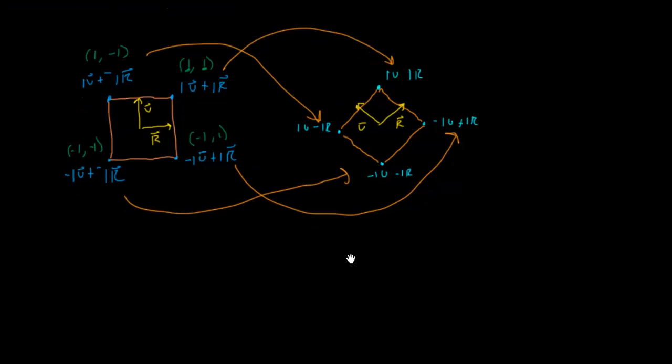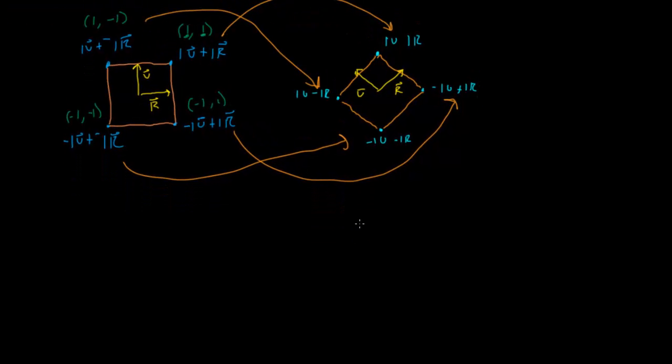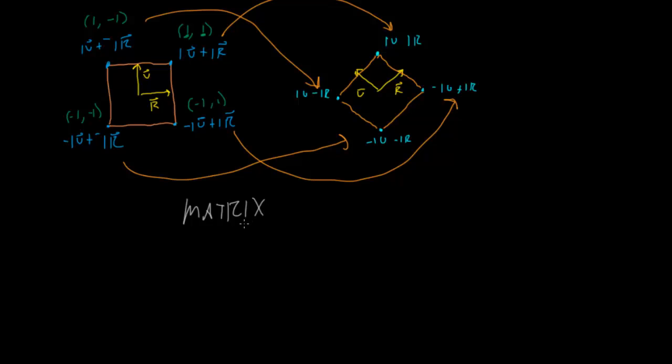And there is actually a mathematical structure that will do this all magically for us. And it is called a matrix. Okay, now I know what you're saying. Oh no, matrices. I hate matrices. They made me do it in high school. I had to multiply them. I had to find determinants. They suck. Well, let me take a moment and convince you that matrices are awesome. Because when we're making games, we actually don't have to multiply or find any determinants of any matrices. The computer will do that for us. All we have to know is how to make matrices do all the amazing things that we want them to do. And I'm going to show you that right now.